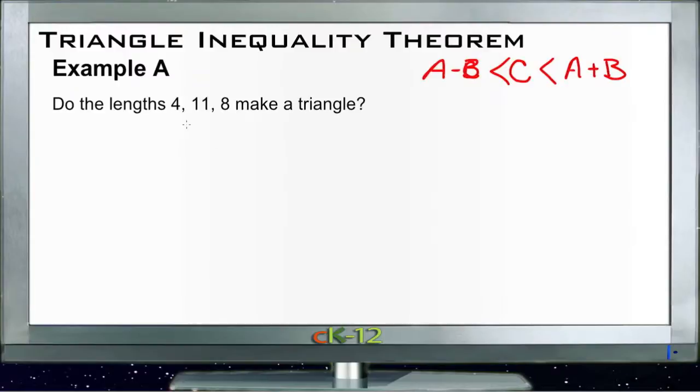Well, if we pick any given side for C, let's say that the longest side is C, then 11 needs to be greater than the difference between 4 and 8, so 8 minus 4, but less than the total of 8 plus 4. 8 minus 4, of course, is 4, and that's less than 11, and 11 is less than 12, so that works.